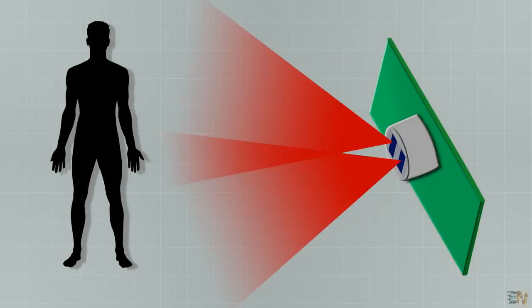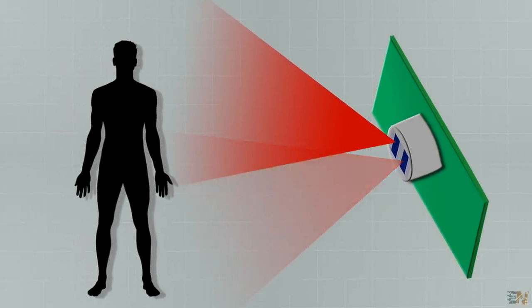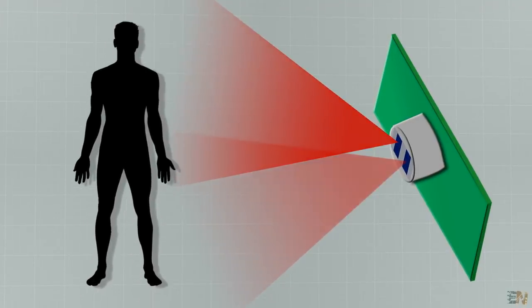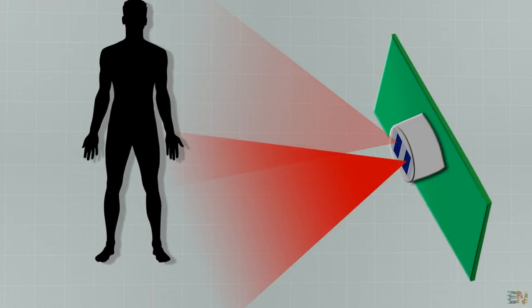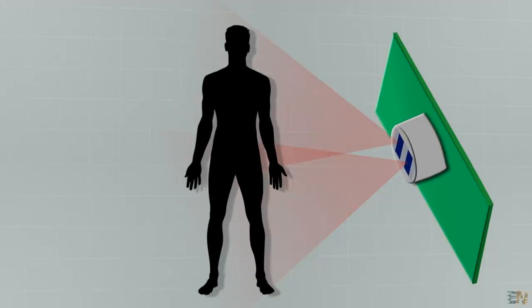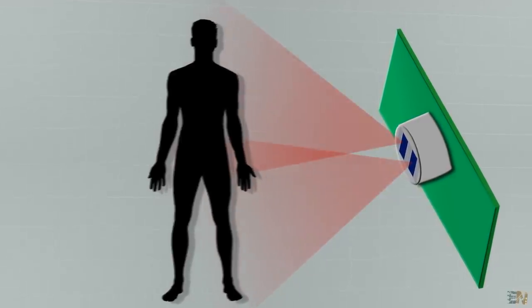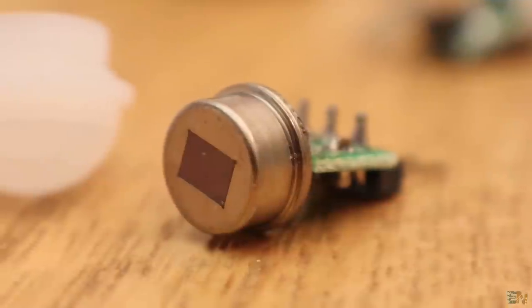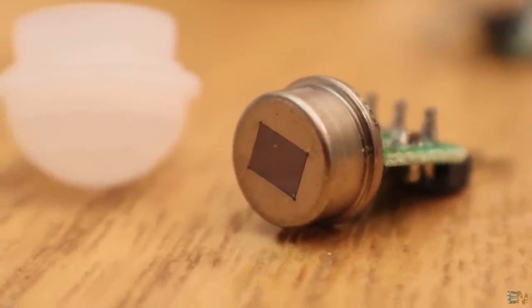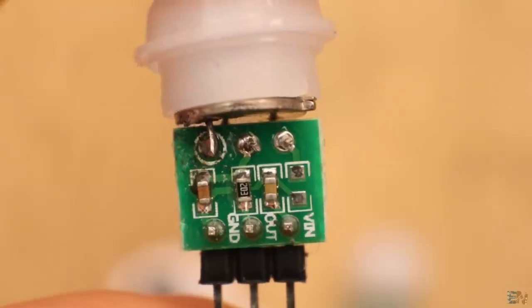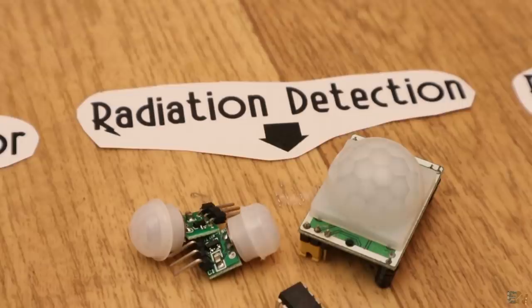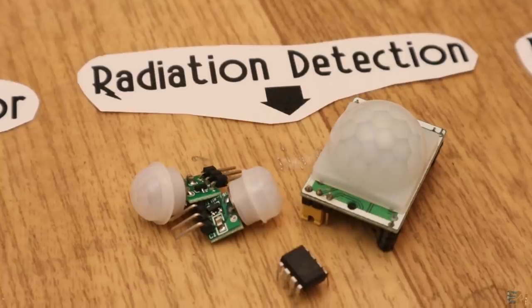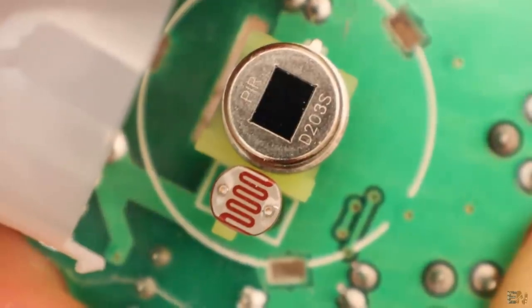But it only detects changes in the radiation value. If the room is empty and a human enters, it will detect that the heat infrared radiation increased. But after a while, if the person won't move, it will turn off its output. But once again, if the person exits the room or moves around, it will detect changes in the radiation values and turn on its output once again. That's why it detects movement. A still person won't trigger this sensor.